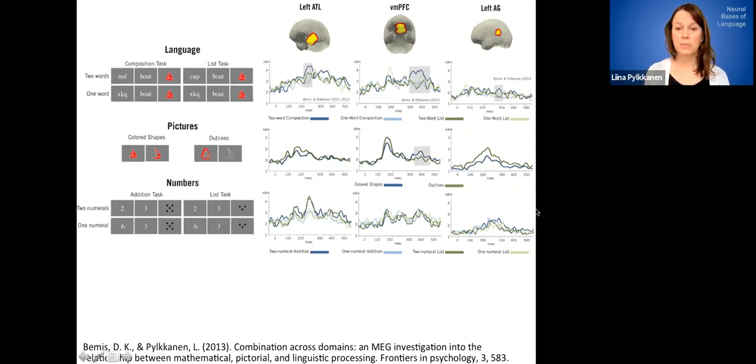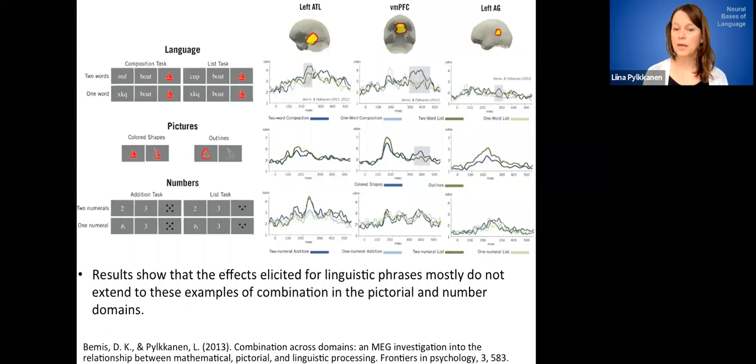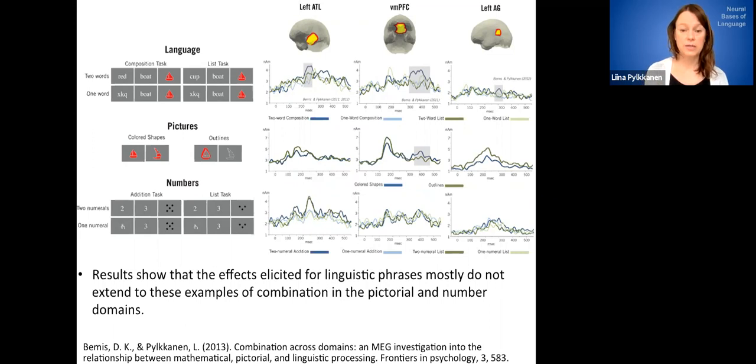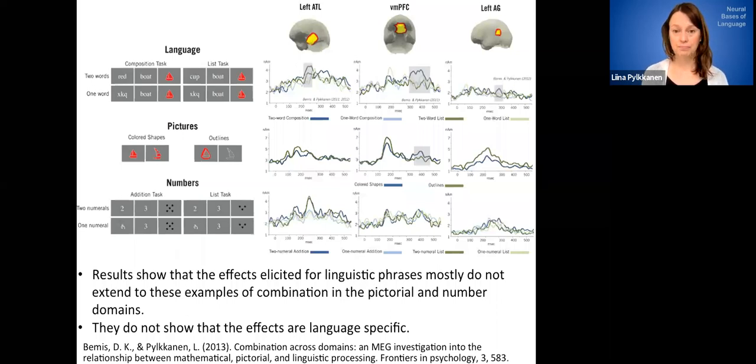In a later study, we didn't actually replicate that ventromedial effect for the picture. So maybe it's not so reliable. So here we see that results from the effects elicited for linguistic phrases mostly do not extend to these other examples of combination in the pictorial number domains, as exemplified by the specific versions of those tasks effects that were tested here. And that's informative about the underlying function of these neural effects, but they don't show that the effects are language specific. These are just a couple of examples of domains or specific stimulus combinations that do not show similar effects.